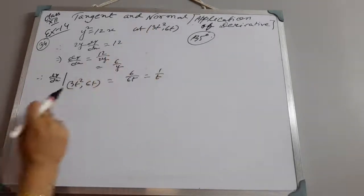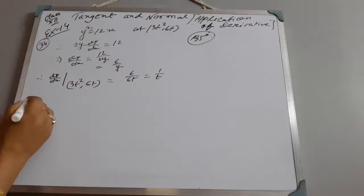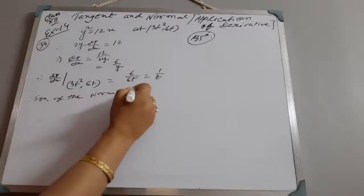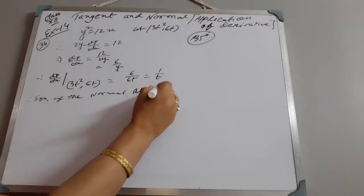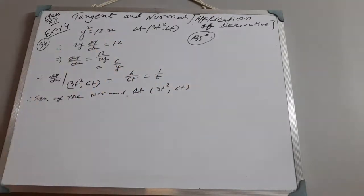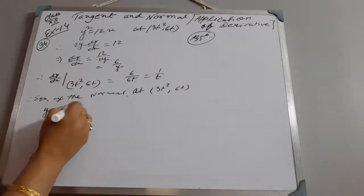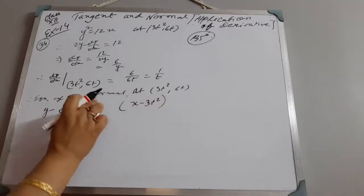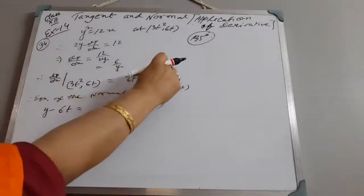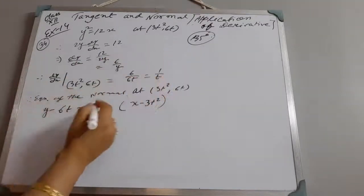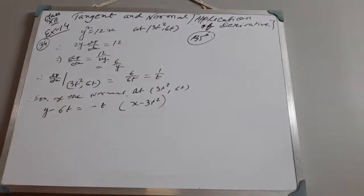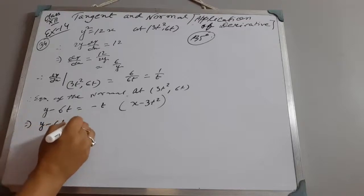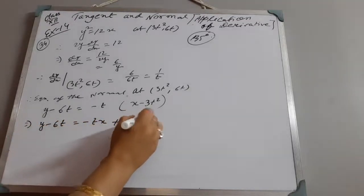Therefore, the equation of the normal at (3t², 6t) to this curve: y − y₁ = m(x − x₁), where y₁ = 6t, x₁ = 3t², and the slope of the normal is −dx/dy = −t. Doing the calculation, we get y − 6t = −t(x − 3t²), which gives y − 6t = −tx + 3t³.